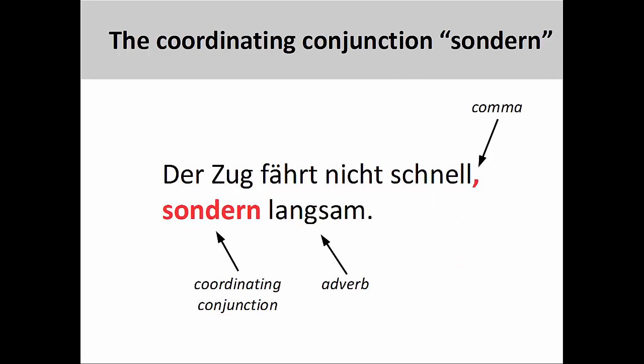When negating adjectives and adverbs with nicht, we can provide additional contrasting information by using the coordinating conjunction sondern, meaning but or rather. Der Zug fährt nicht schnell, sondern langsam — the train doesn't run fast, but rather slow. Note that you need to use a comma before sondern to mark the end of the clause. We'll cover coordinating conjunctions in more detail in a later presentation.